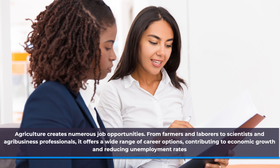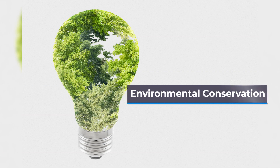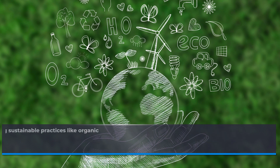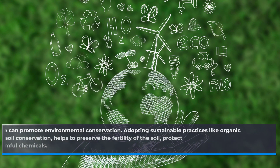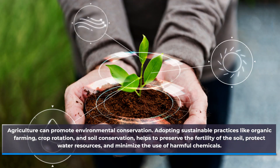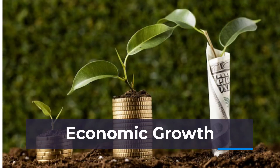Environmental conservation: agriculture can promote environmental conservation. Adopting sustainable practices like organic farming, crop rotation, and soil conservation helps to preserve the fertility of the soil, protect water resources, and minimize the use of harmful chemicals. Economic growth: